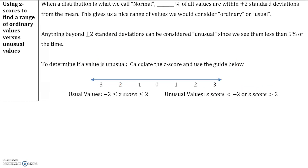When a distribution is normal, 95% of the values are within two standard deviations — either two standard deviations above or two standard deviations below the mean. In a normal distribution, most of the values — 95% of them — fall within two standard deviations of the mean. This gives us a nice range of values which we consider ordinary or usual. Anything beyond two standard deviations is considered unusual, since we see it less than 5% of the time.